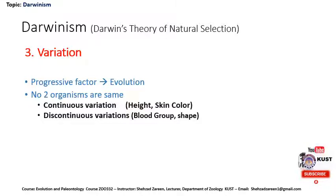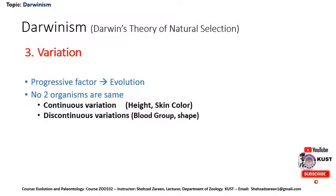Continuous variation is that type of variation which has a slight change in continuity — like height or skin color. For example, height may be one foot, two feet, three feet, four, five, six, and so on. Similarly, skin color may be light, dark, whitish, or chocolatey. So this is a sort of continuous variation.